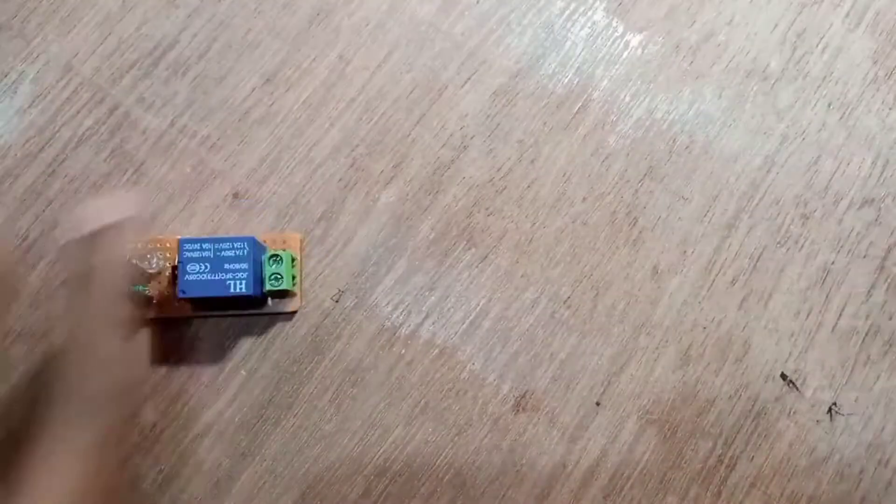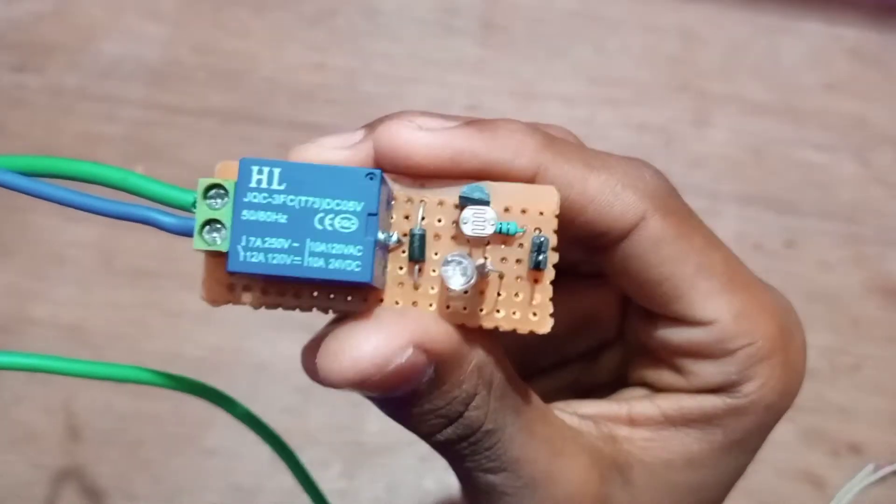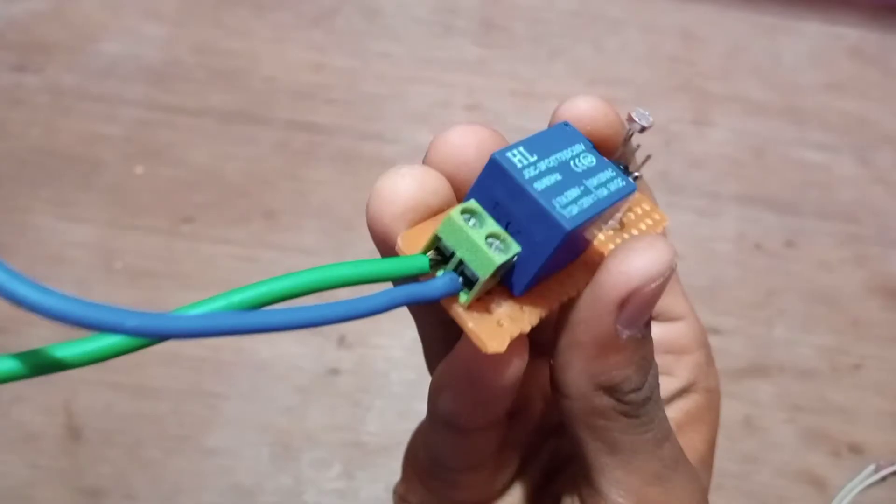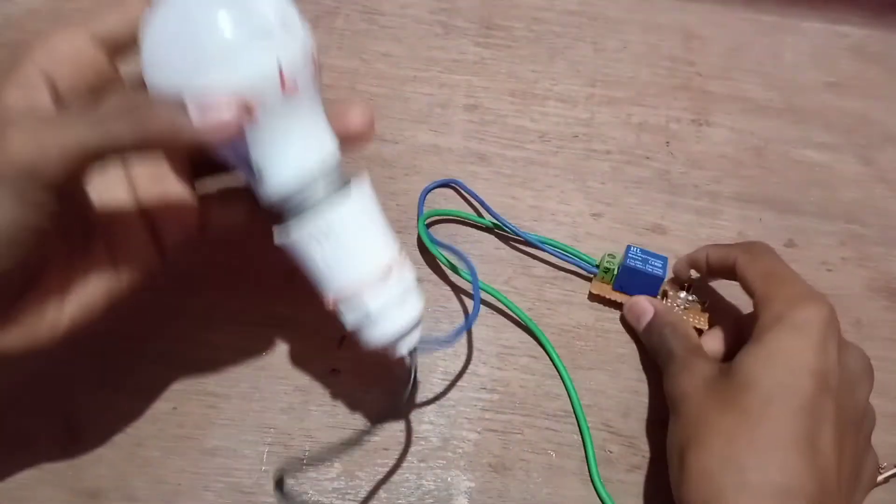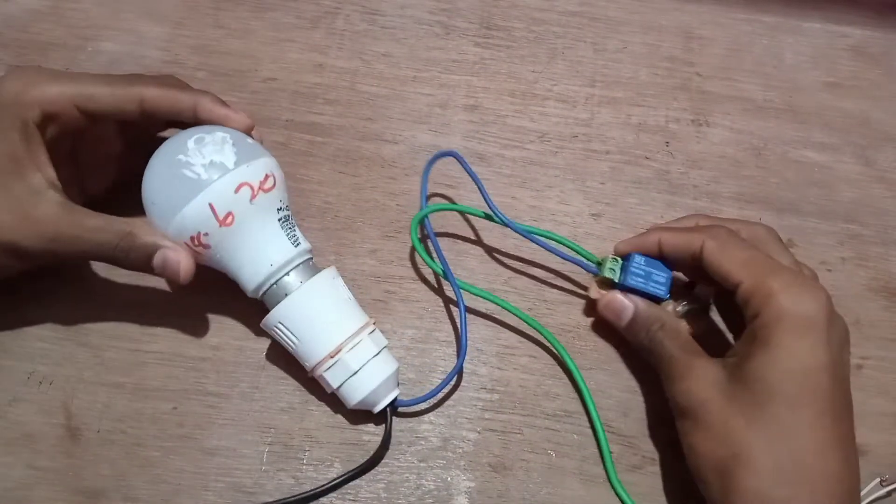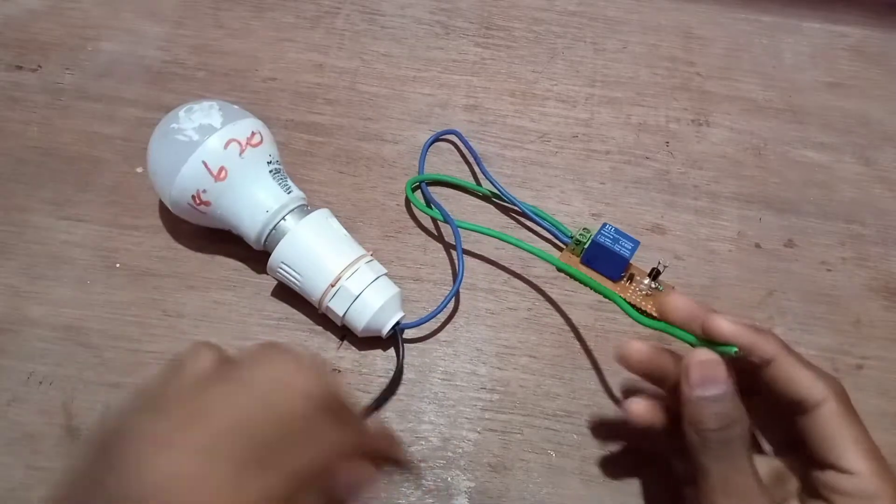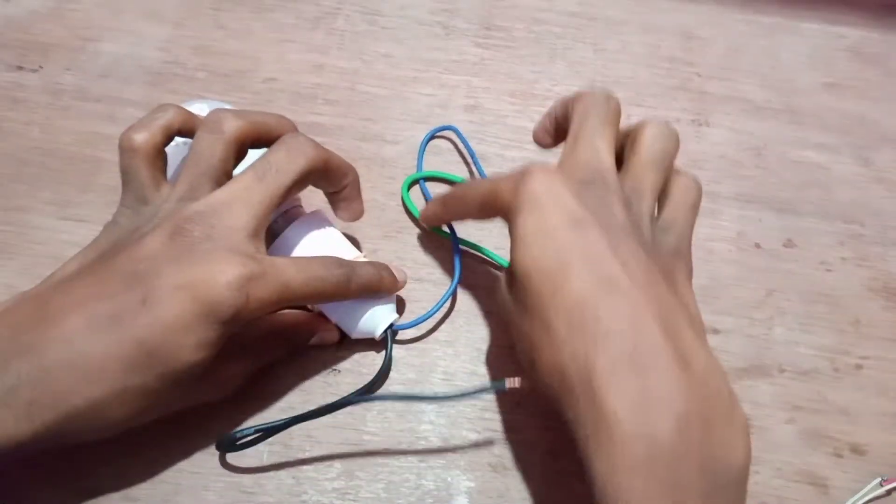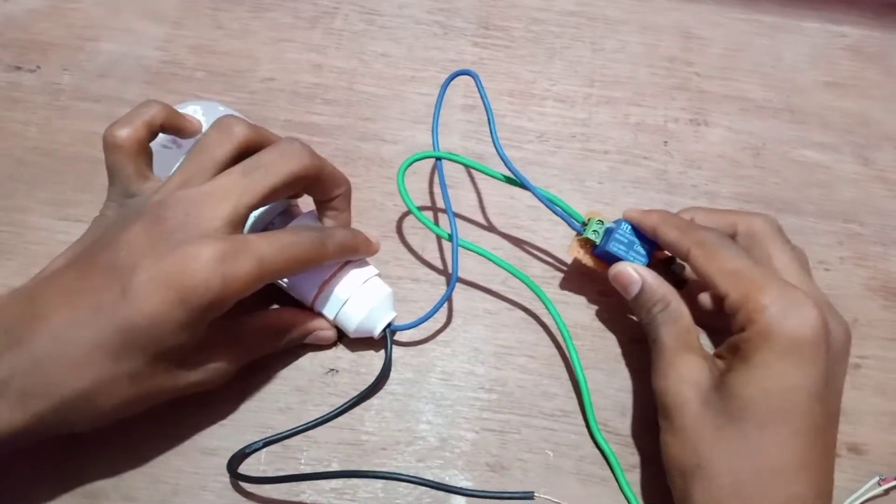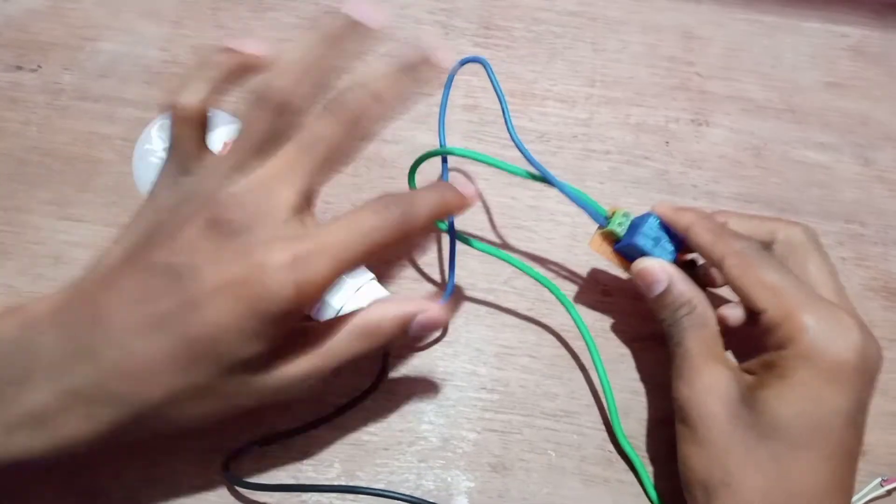Next is the connection of the 220 volt AC bulb. The green wire is directly connected to 220 volt AC supply. And the blue wire is in series connection with the 220 volt AC bulb. Next, the black wire is connected to the AC supply 220 volt.